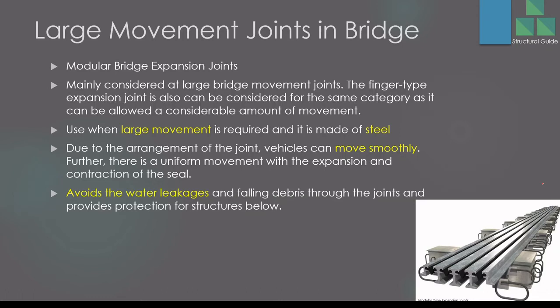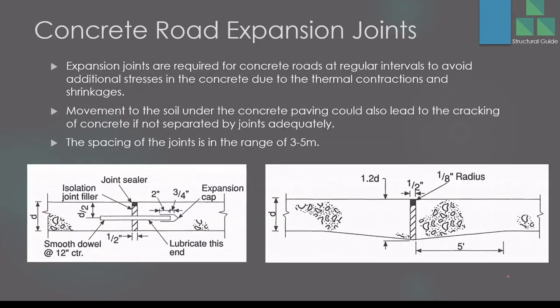For large movement requirements, we use modular bridge expansion joints. These are mostly made of steel — steel bars allow significant or considerable broader movement. Similar to finger joints, two components are fixed to the structure and the middle part accommodates movement. Water seepage can be controlled by installing a water bar at the bottom to drain water away properly, which enhances the durability of these joints.